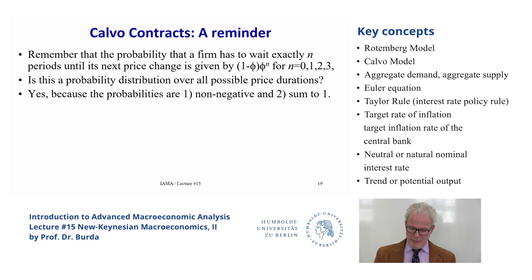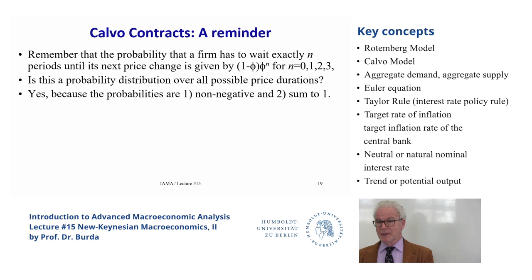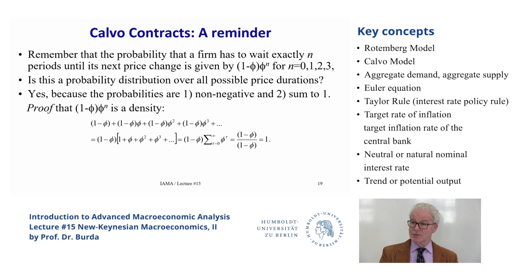Phi is so important: one minus phi is the probability you can change today; the probability you can change in two periods but not the first is (1 minus phi) times phi. You can define that as a density for the distribution of probability mass over every period you may have to wait — one period, two periods. You won't have to wait infinitely because that probability approaches zero, but you could be stuck for a long time, like an Italian barber setting the price for a year or two without changing it.